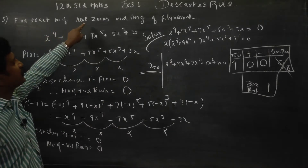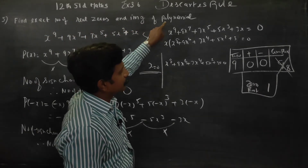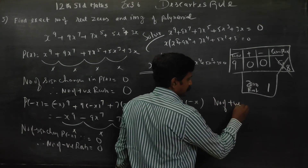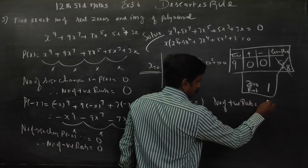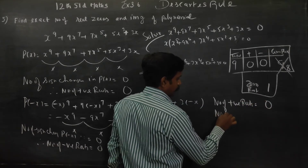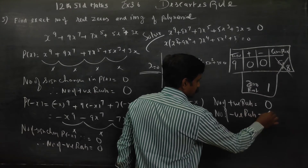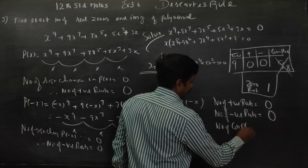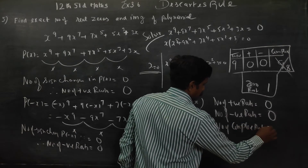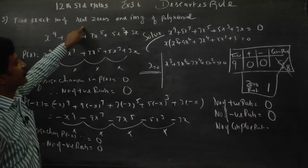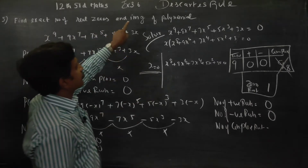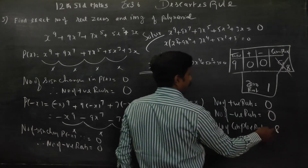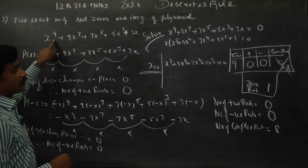So, to find the exact number of real zeros and imaginary roots of the polynomial: number of positive roots is 0, number of negative roots is also 0, number of complex roots is 8. The real roots come only from x = 0, so there is exactly 1 real root. Imaginary roots is actually 8.